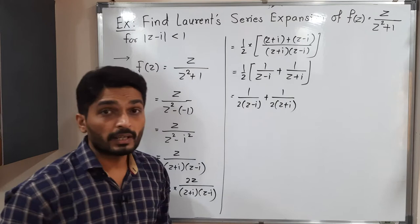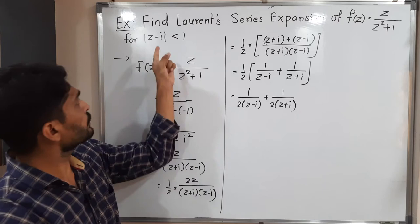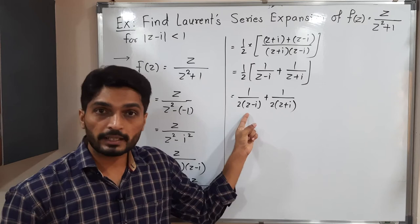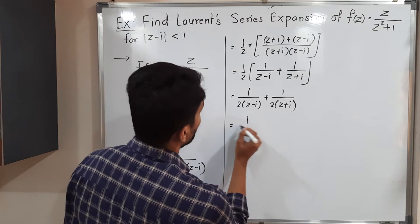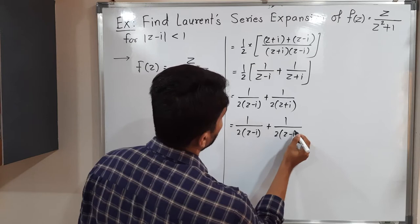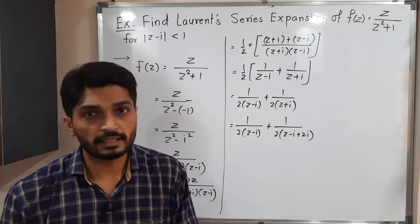As mentioned earlier, in a Laurent expansion we want the bracket (z - z₀), where here z₀ = i. So we want the bracket (z - i). We already have that bracket in the first term. For the second term we need to adjust: 1/(2(z + i)) becomes 1/(2((z - i) + 2i)), since z + i = (z - i) + 2i.